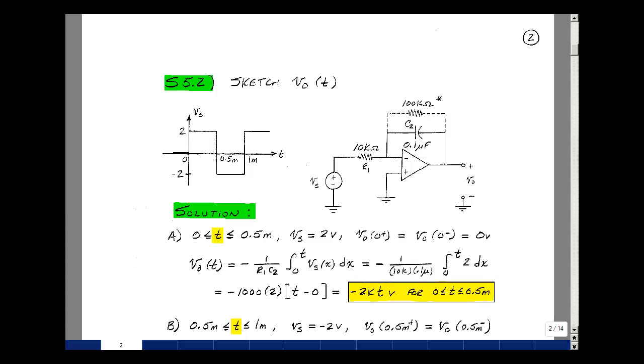This lesson deals with supplemental problem 5.2. You can find this problem in the course ebook in the Chapter 5 Supplemental Problems on page 2. Given the integrator circuit that we had in supplemental problem 5.1, with this input, which is a square wave, going from 2 volts to minus 2 back to 2 and so on, could you solve for Vout as a function of time?